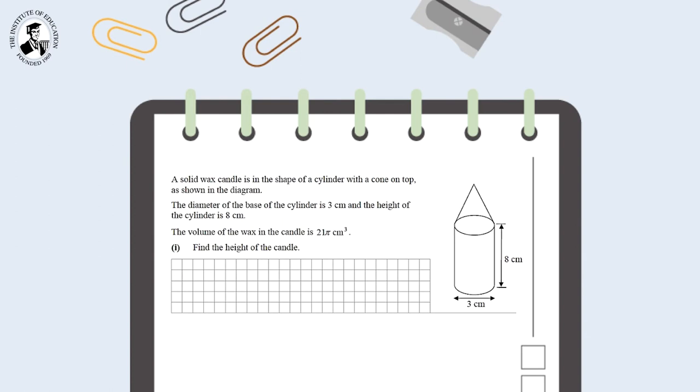A solid wax candle is in the shape of a cylinder with a cone on top as shown in the diagram. The diameter of the base of the cylinder is 3cm and the height of the cylinder is 8cm. The volume of wax in the candle is 21π cm³ and we are being asked to find the height of the candle.